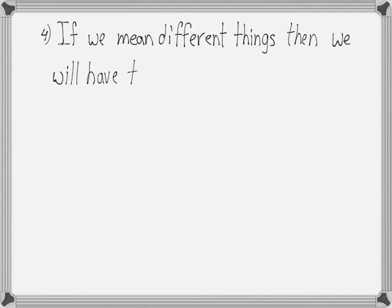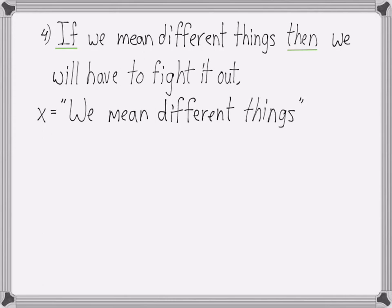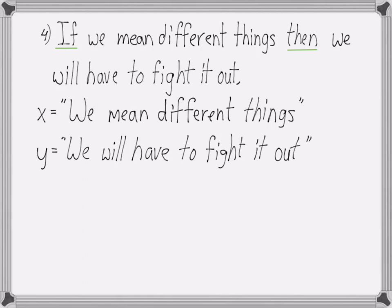For the statement, 'if we mean different things, then we will have to fight it out', notice that we've got the connectives if then in there. We can find the variables in between the words if and then. The first variable stands for 'we mean different things'. Notice that that is a complete statement on its own. We can let y stand for 'we will have to fight it out'. Also a complete statement. Then, the whole sentence gets translated as x implies y. Notice how much more compact and simple the logical notation is.